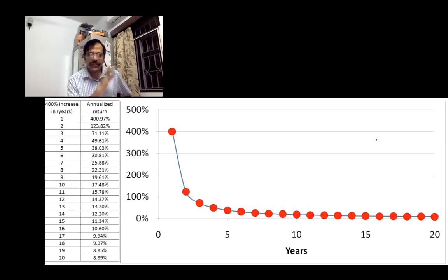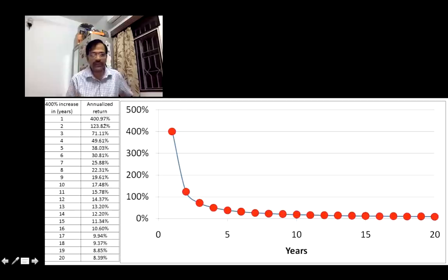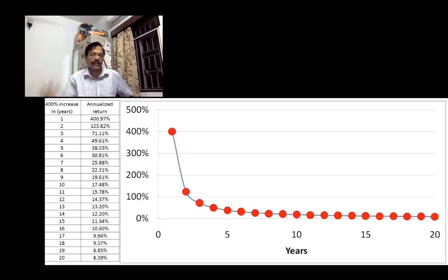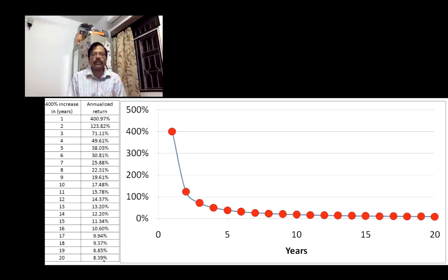Here is a simple illustration. Assume a 400% increase happens in just one year — that is a 400% annualized return, because one year is the same. If that 400% increase happens over two years, the annualized return is 123%. Look at how much it has already dropped. Over three years it is 71%, over four years 49% — the annualized return keeps dropping as time increases. That is exactly what we saw with the Sensex: from triple-digit values it drops to 8% over 20 years, even though the absolute increase is still 400%. There is nothing wrong with the investment — I am simply showing how important the role of time is.